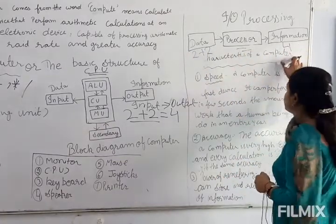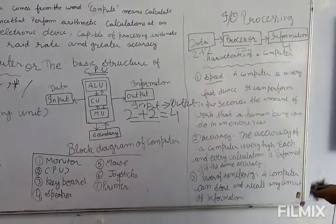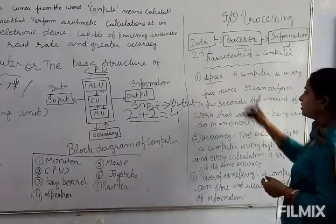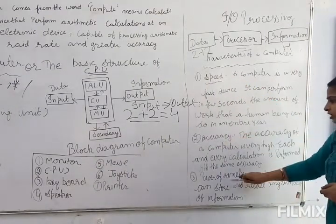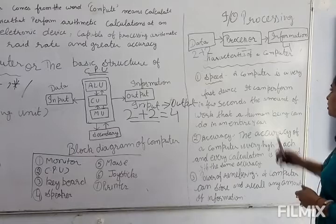Characteristics of computer: सबसे पहले इसकी speed बहुत अच्छी होती है, accuracy होती है और power of remembering अच्छी होती है.